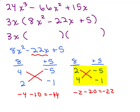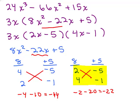So we go back and plug in. This represents 2x minus 5 for one parenthesis and 4x minus 1 for the other. The full factored answer is 3x times 2x minus 5 times 4x minus 1. Make sure when you multiply 2x minus 5 times 4x minus 1 you get 8x squared minus 22x plus 5, and when you multiply all of that by 3x using the distributive property, you get 24x cubed minus 66x squared plus 15x. We're looking for the factored form, so this is our answer.